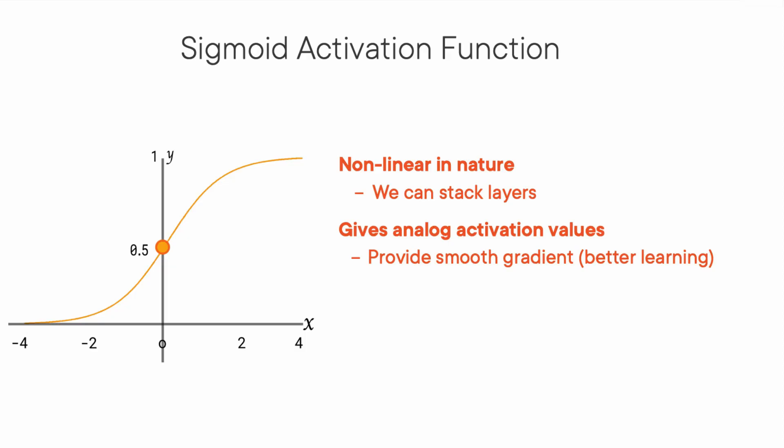Then what are the problems with this? There is the vanishing gradient problem. If you notice towards both ends of the sigmoid function, the Y values tend to respond very less to changes in X. What does that mean? The gradient at that region is going to be small or has vanished, which means the network refuses to learn further or is drastically slow. We call this the vanishing gradient problem. But still, it's very popular in classification problems.